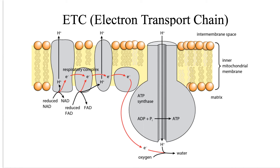Those ATP molecules are produced by substrate-level phosphorylation. So far till ETC, the number of ATP molecules produced are 2 from glycolysis and 2 from the Krebs cycle — so 4 ATP molecules totally, which is quite low. So where is all this energy from glucose?